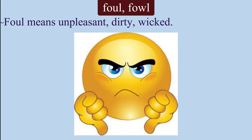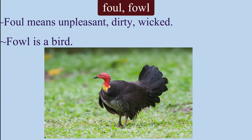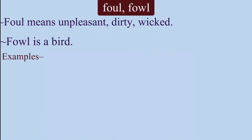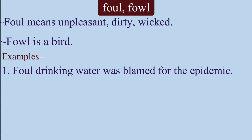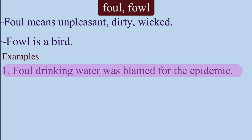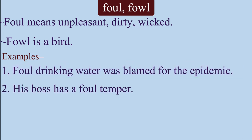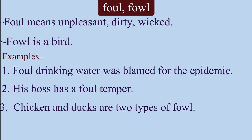The next pair is 'foul' and 'fowl' — these are homophones. 'Foul' means unpleasant, dirty, or wicked, whereas 'fowl' refers to a bird. Examples: Foul drinking water was blamed for the epidemic. His boss has a foul temper. Chicken and ducks are two types of fowl.